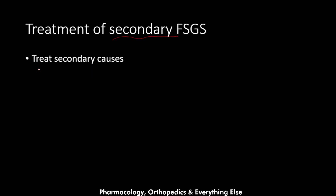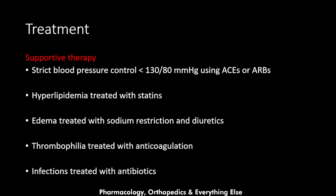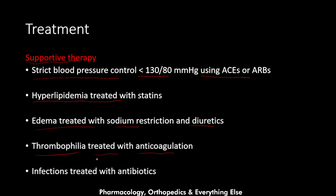Treatment of secondary FSGS involves treating the underlying cause. For both primary and secondary FSGS, supportive therapy includes strict blood pressure control below 130/80 using ACE inhibitors or ARBs, statins for hyperlipidemia, sodium restriction and diuretics for edema, anticoagulation for thrombophilia, and antibiotics for infection.